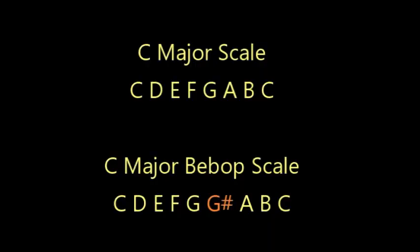These chords are derived from that. So let's look at what a bebop scale is, and let's start with a major scale and a bebop major scale. I show those on the screen here. Notice the difference between the C major scale and the C major bebop scale is the G sharp note — everything else is the same.